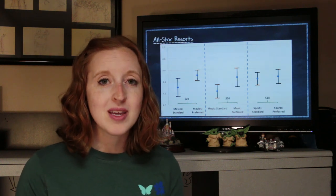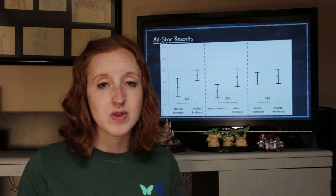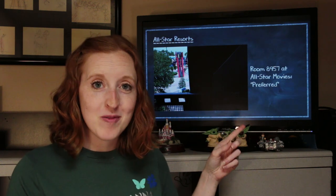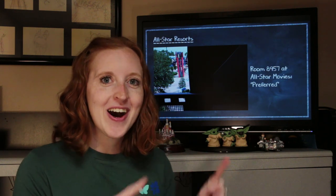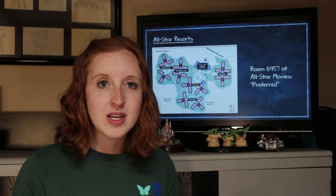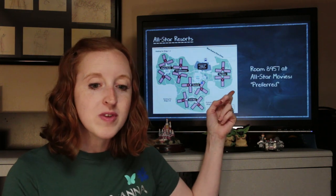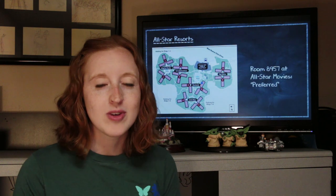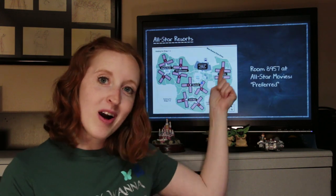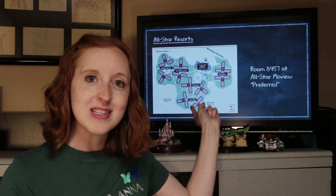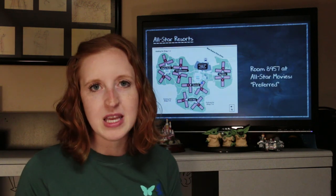As an example, room 8957 at All-Star Movies is a preferred room. The view itself — a bit of pool area and a support structure — is not what you're paying for. What you're paying for is the location. This blue dot on building 8 is right near the lobby and transportation. So if you want a shorter walk every morning to the buses rather than trekking to the end of building 7, that might be worth it to you.